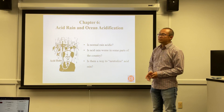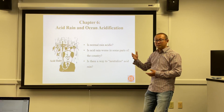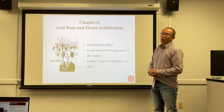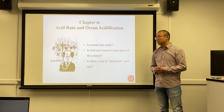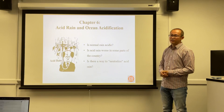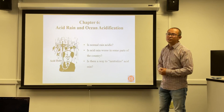Here are some questions we want to answer: What is acid rain, and is normal rain acidic? Why is some rain called acid rain? Is acid rain worse in some parts of the country geographically, and is there any way to neutralize acid rain or any natural conditions that can do so?